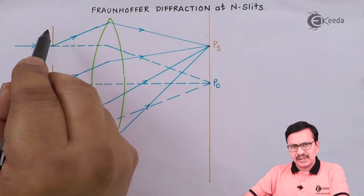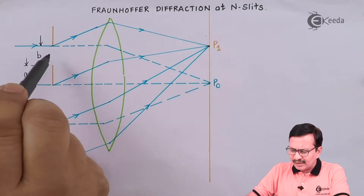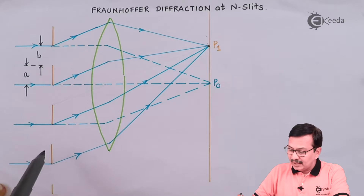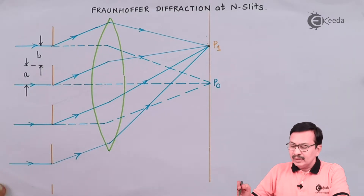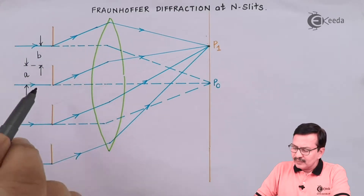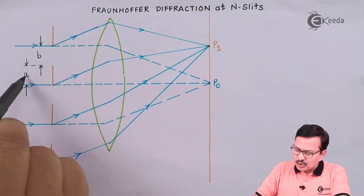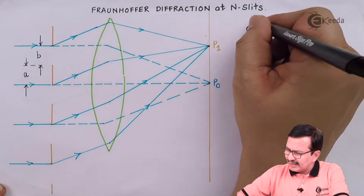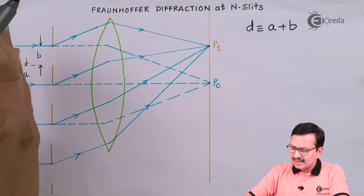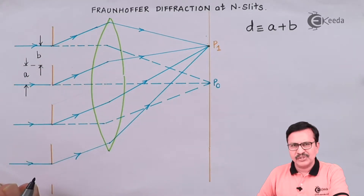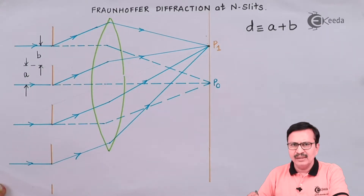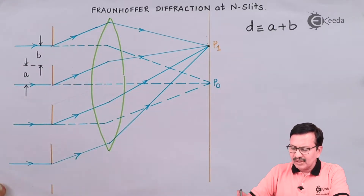When we say n slits, we have an opaque part and a transparent part, followed once again by an opaque part and a transparent part, and so on. The width of the transparent part we are assuming to be b, and the width of the opaque part we are assuming to be a, so d equals a plus b. We are assuming monochromatic light is falling on this plane transmission grating.